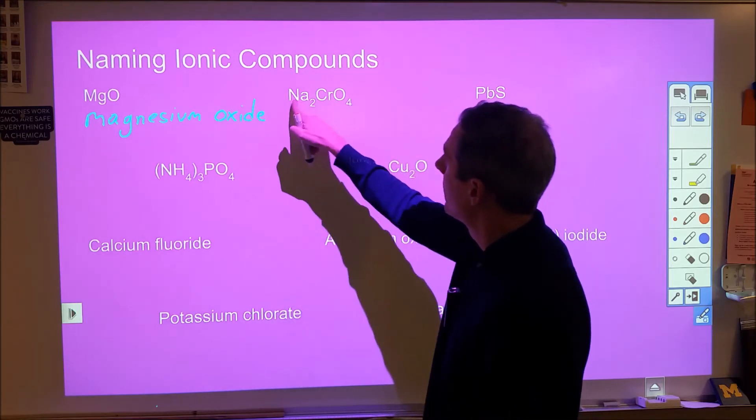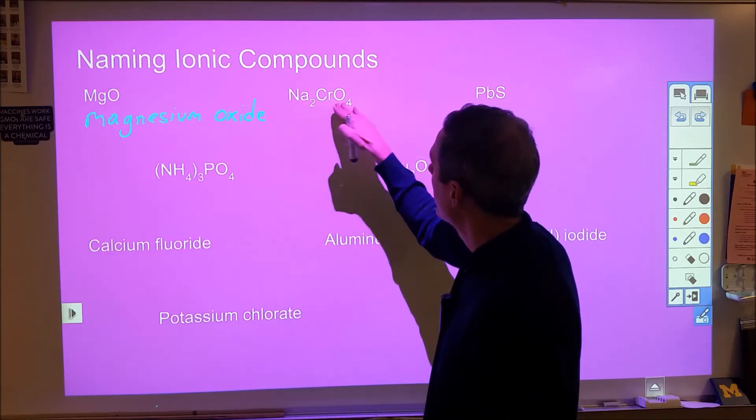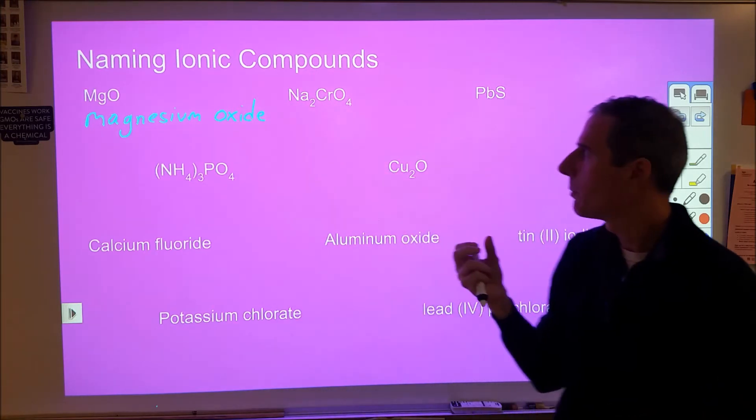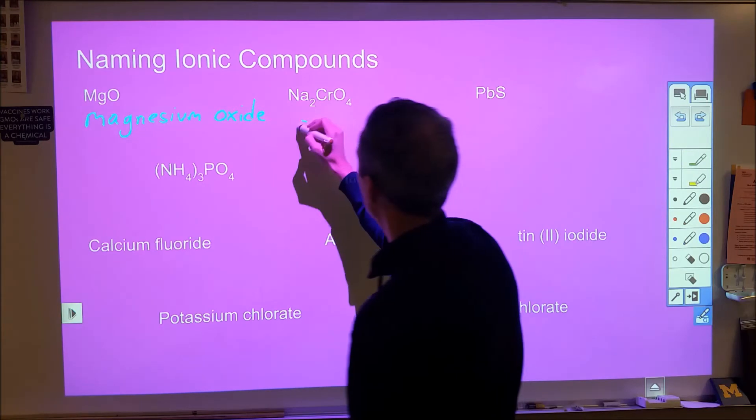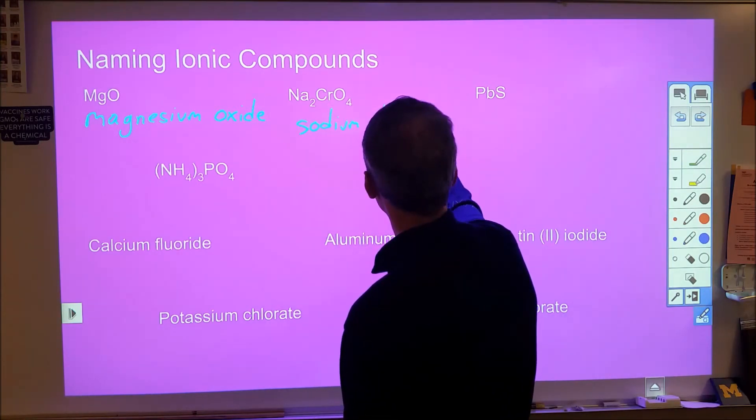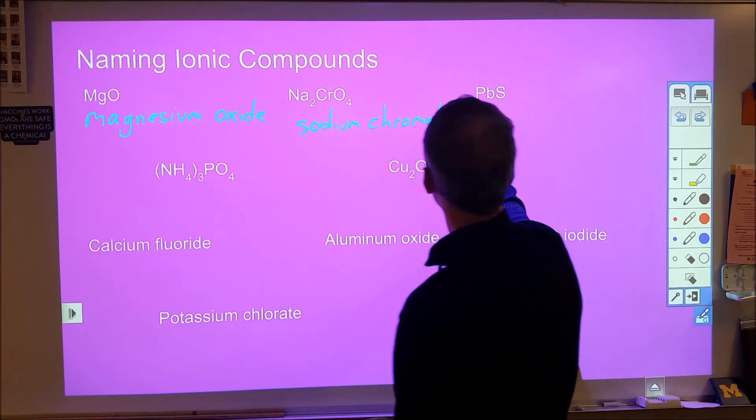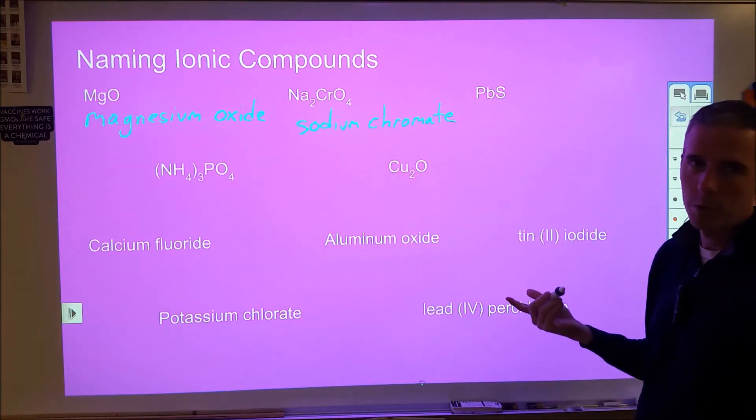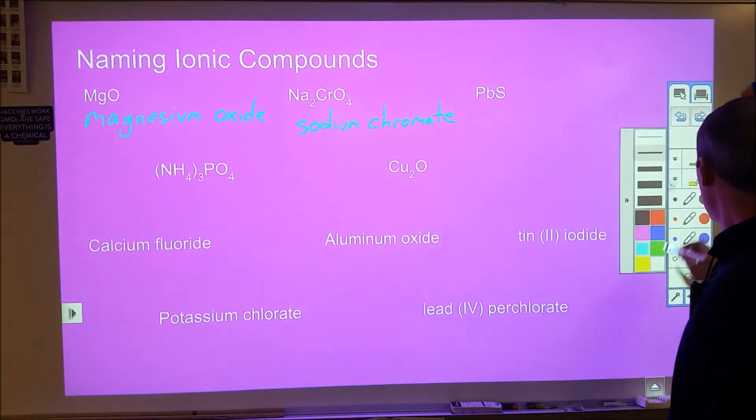Here we have sodium and then we have a polyatomic ion so if you ever see more than three elements or more than two elements you can probably have a polyatomic ion so we would just name them and then we're not going to change the ending. So sodium and chromate become sodium chromate.